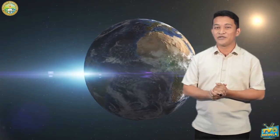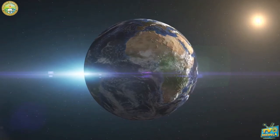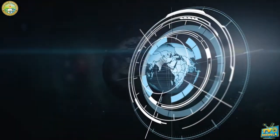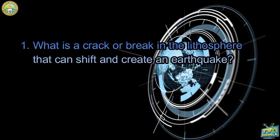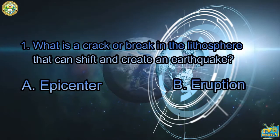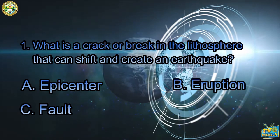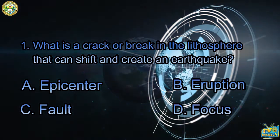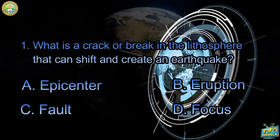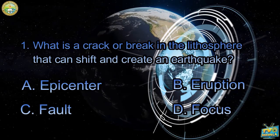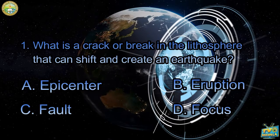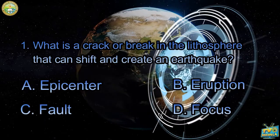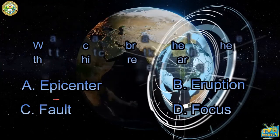Directions: Choose the letter of the correct answer and write your answers on a separate sheet of paper. Question number 1: What is a crack or break in the lithosphere that can shift and create an earthquake? The choices are: A) Epicenter, B) Eruption, C) Fault, and D) Focus. The correct answer is Letter C — Fault.